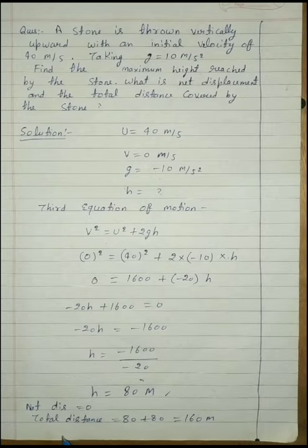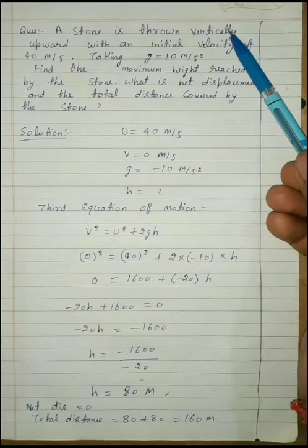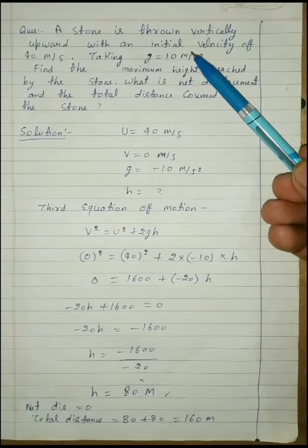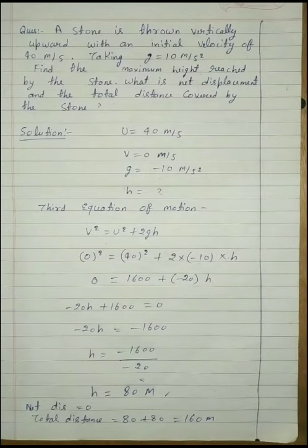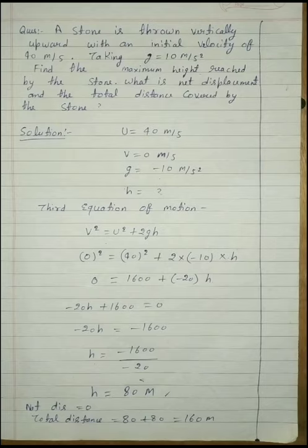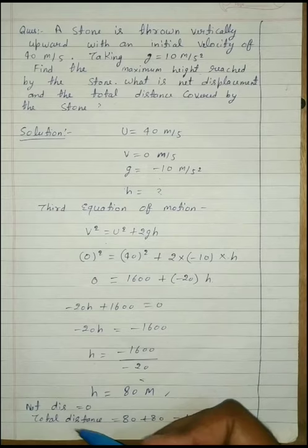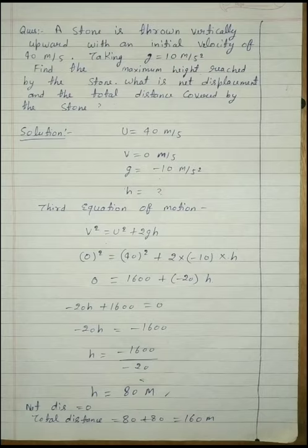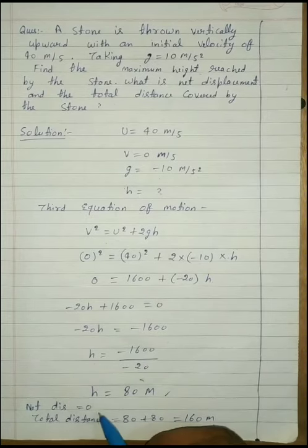Net displacement is zero, because the stone is first thrown vertically upward and then comes vertically downward, so the initial point and final point overlap each other. The definition of displacement is the shortest distance between the initial point and the final point, which is zero. However, the total distance is 80 meters upward plus 80 meters downward, giving a total of 160 meters covered by the stone.